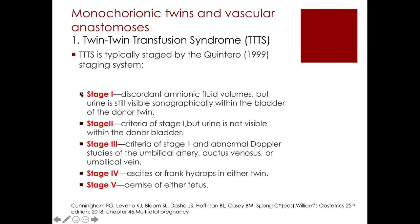In stage one, the amniotic fluid volume is discordant but urine is still visible sonographically within the bladder of the donor twin. In stage two, amniotic fluid volumes are discordant and urine is no longer visible within the donor bladder. Stage three adds abnormal Doppler studies of the umbilical artery, ductus venosus, or umbilical vein. Stage four shows ascites or frank hydrops, and stage five is the demise of either fetus.